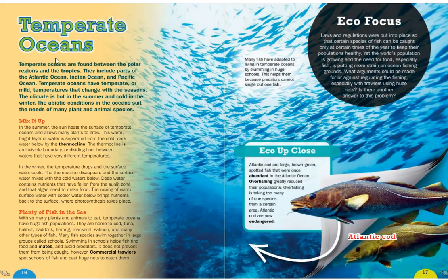Temperate oceans are found between the polar regions and the tropics. They include parts of the Atlantic Ocean, Indian Ocean, and Pacific Ocean. Temperate oceans have mild temperatures that change with the seasons — hot in the summer and cold in the winter. The abiotic conditions in these oceans suit the needs of many plant and animal species.